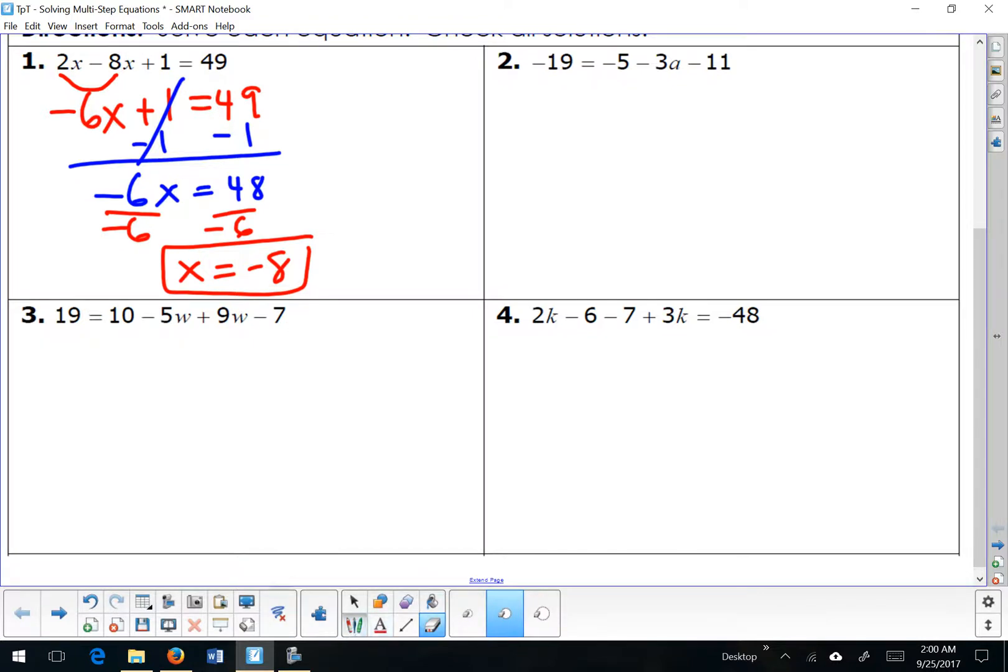What I'm looking for is to join any terms that are alike. See these two? They both have W's, so I could join those together. And you see these two here? They're both plain old numbers or constants, so I can actually join those together as well. I'm going to leave my 19 the way it is and shorten this side. It doesn't matter which ones I combine first. I'm going to go with the W's, the variable term. Negative 5 plus 9 is 4W's. And 10 minus 7 is positive 3.